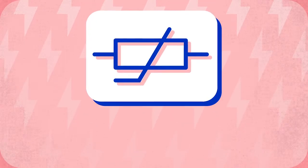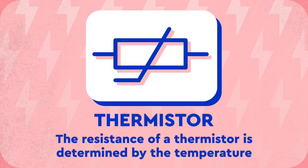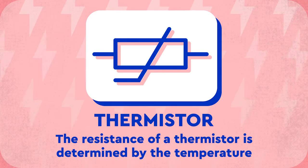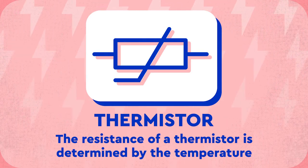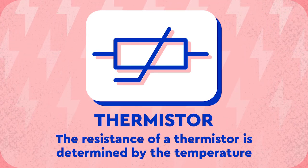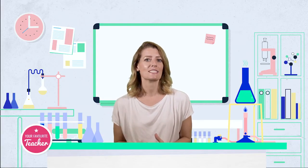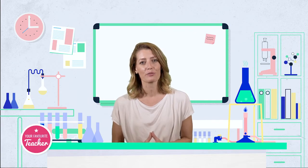Thermistors are a special type of resistor. The resistance of a thermistor is determined by the temperature. At high temperatures the resistance is low. As the temperature decreases, the resistance of the thermistor increases. Thermistors are used in thermostats to automatically turn central heating and air conditioning on or off.